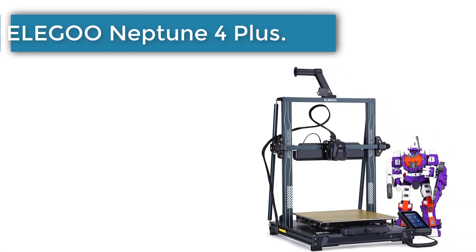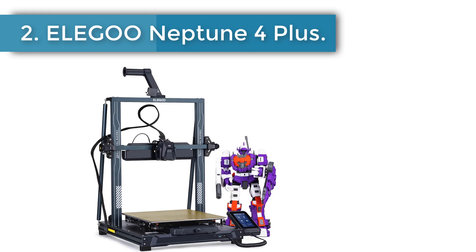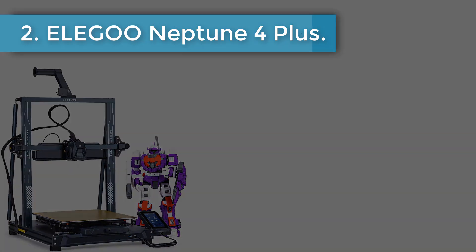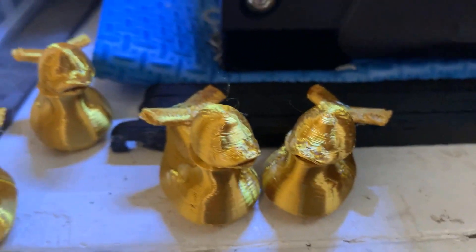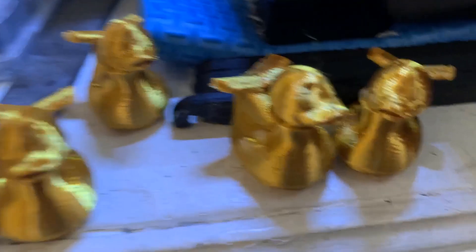Number 2: Elegoo Neptune 4 Plus. The Neptune 4 Plus caught our eye with its lightning-fast printing speeds. We were amazed to see it zip through prints at up to 500 millimeters per second. This speed boost lets us finish projects much quicker than with other printers we've tested.